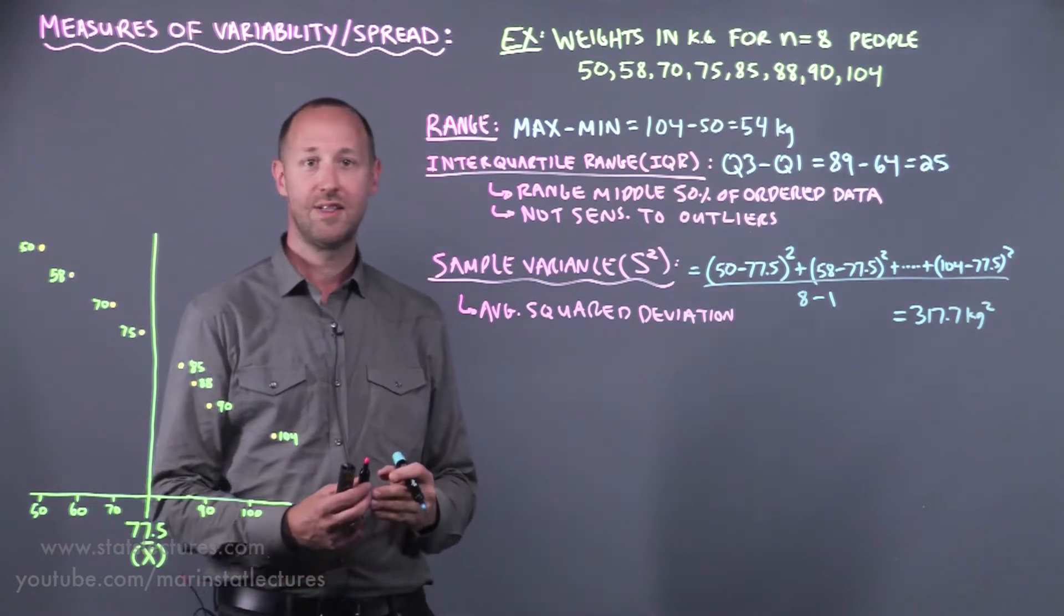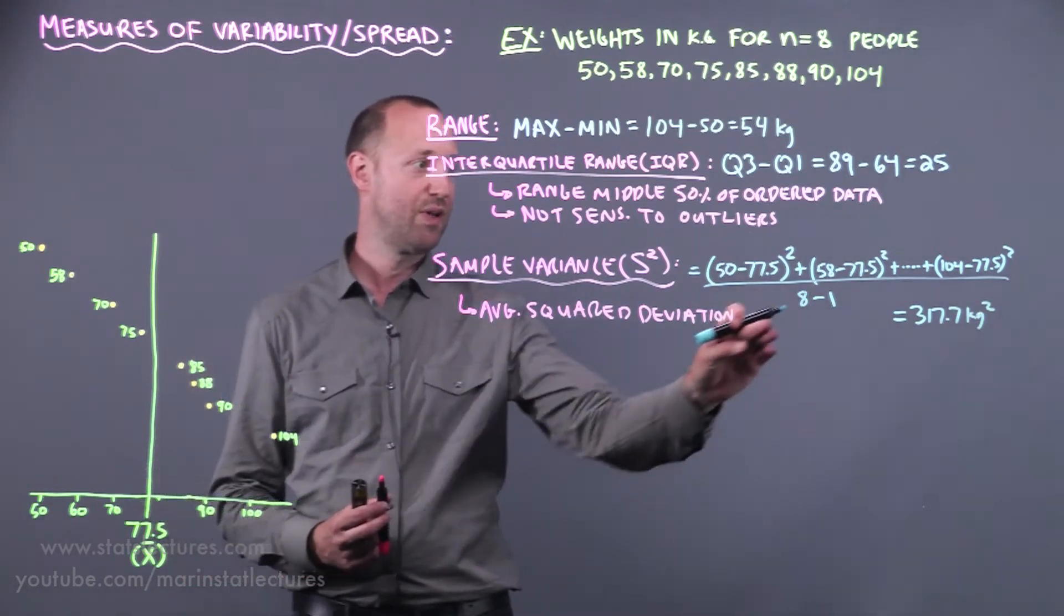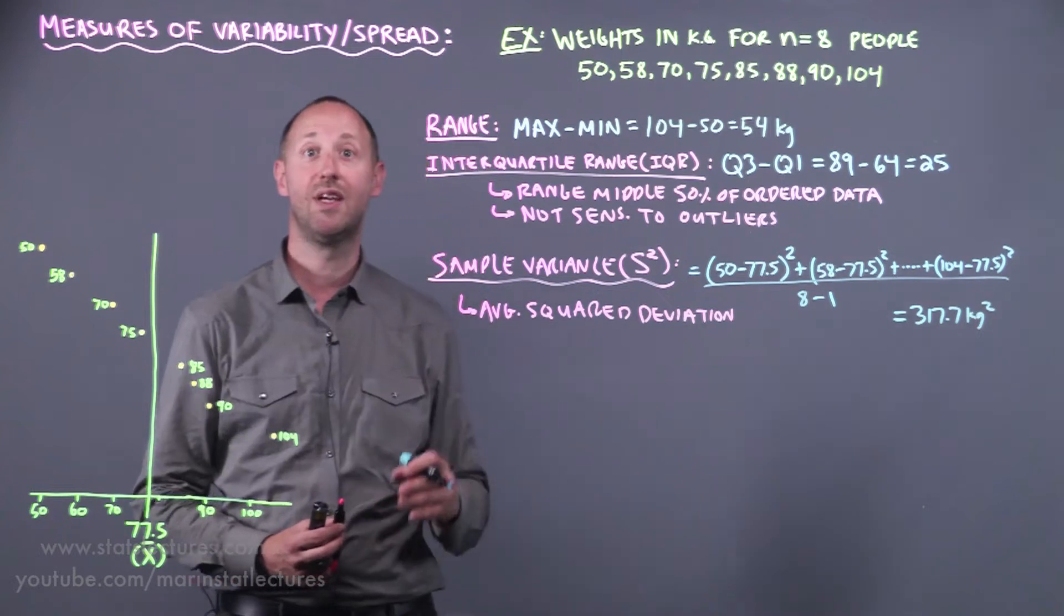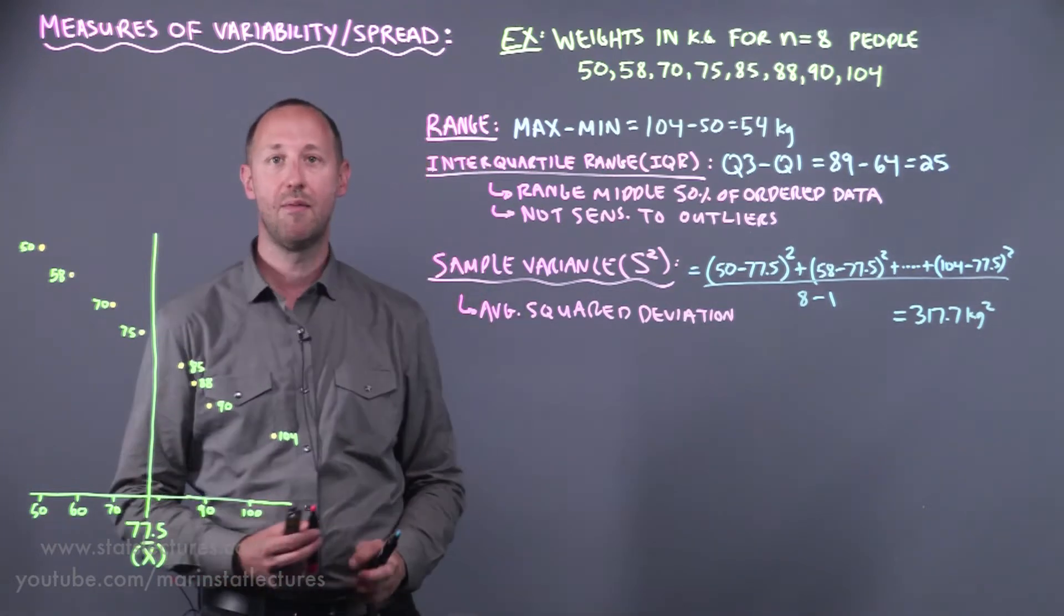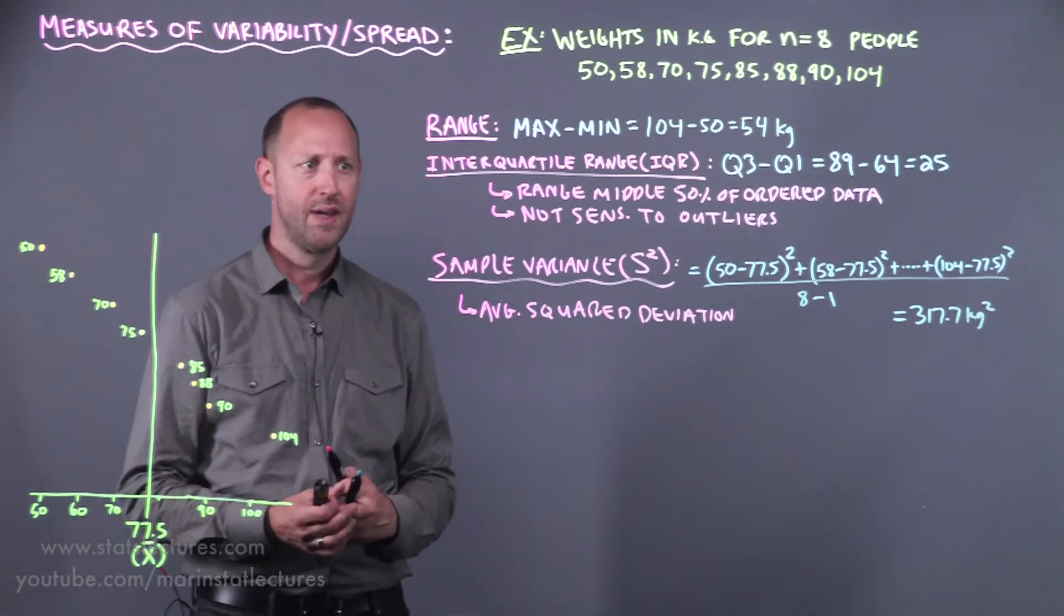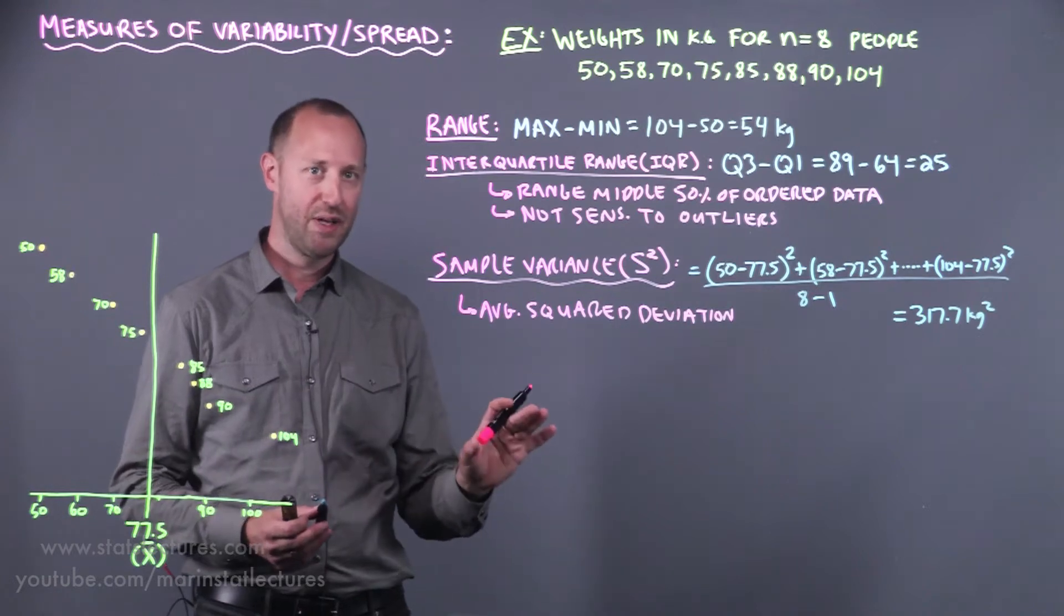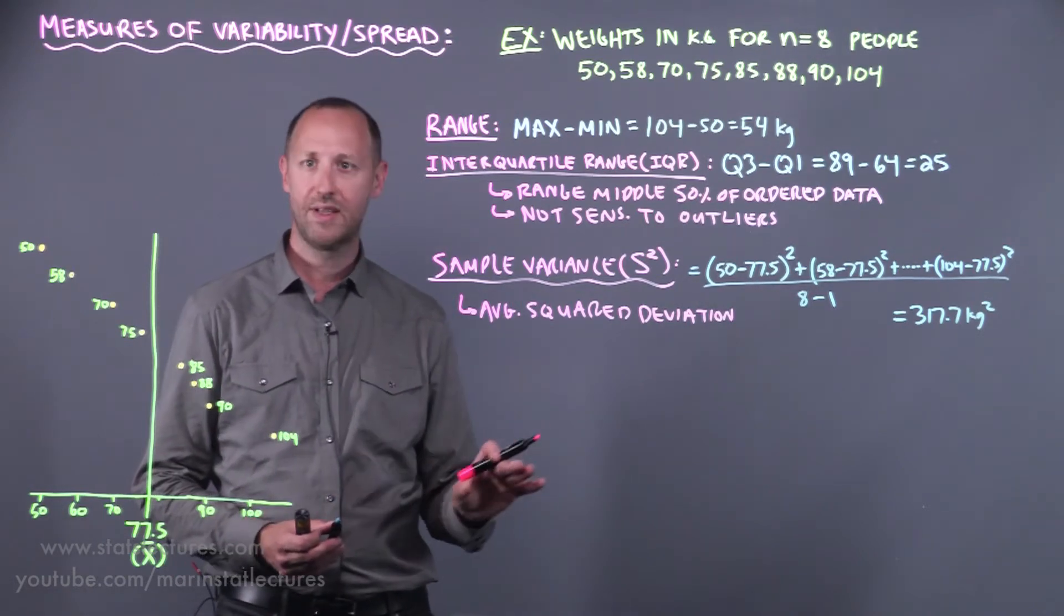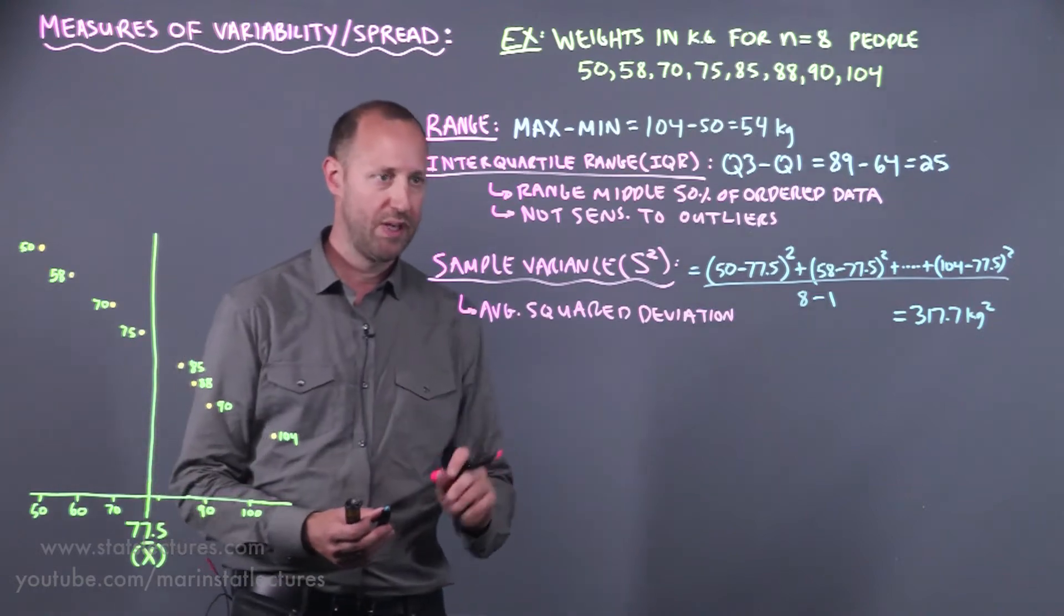On average an individual's weight is moving 317.7 kilograms squared from that sample mean of 77.5. Of course this doesn't have that much of a meaningful interpretation yet, but when we get to the sample standard deviation we'll make it a little bit more meaningful.